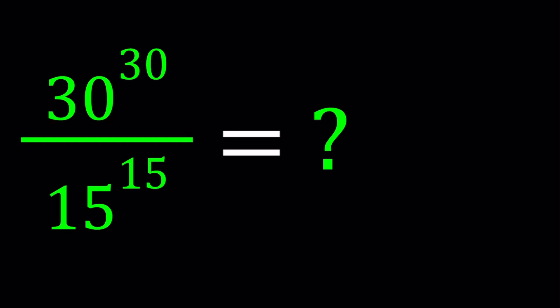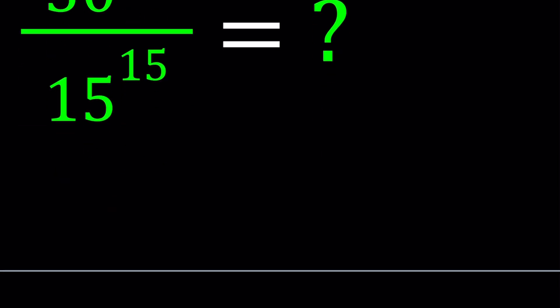Hello everyone. In this video we're going to be simplifying a numerical expression with exponents. We have 30 to the power 30 divided by 15 to the power 15. And I'll be presenting three methods. Let's start with the first one.